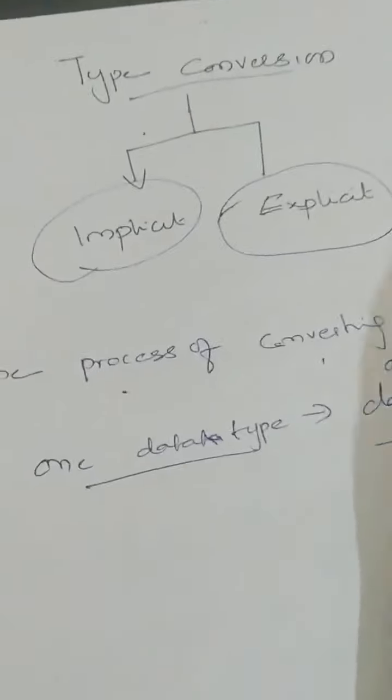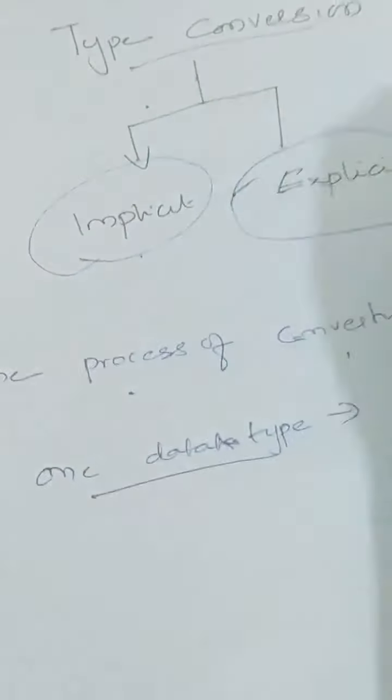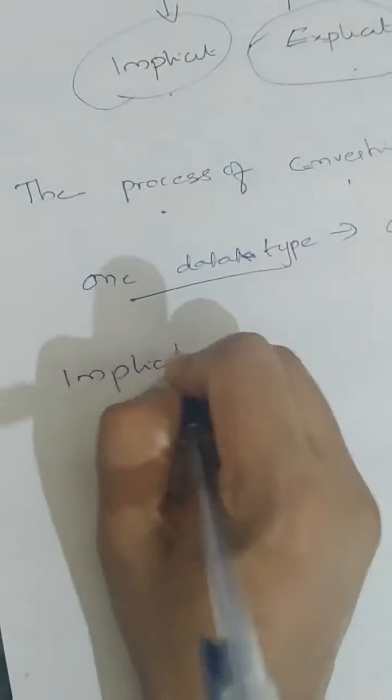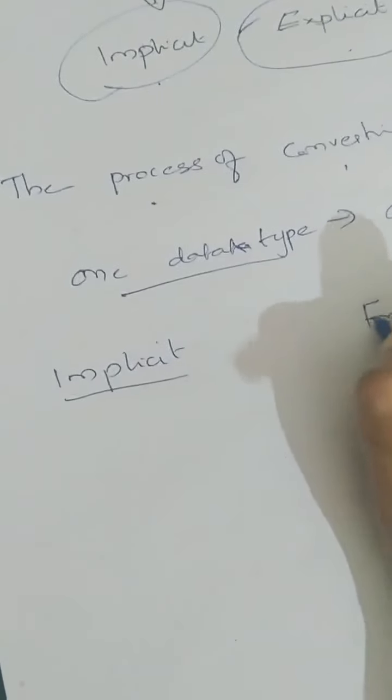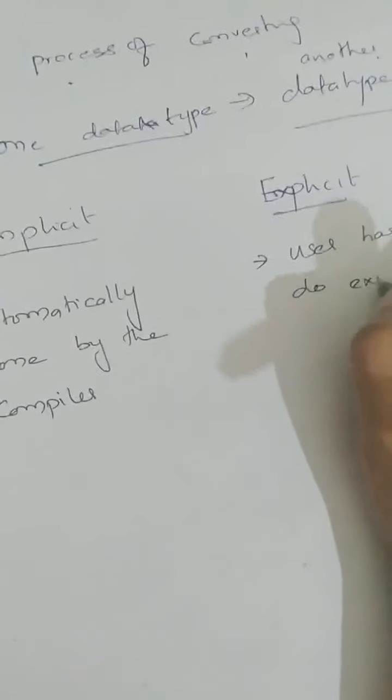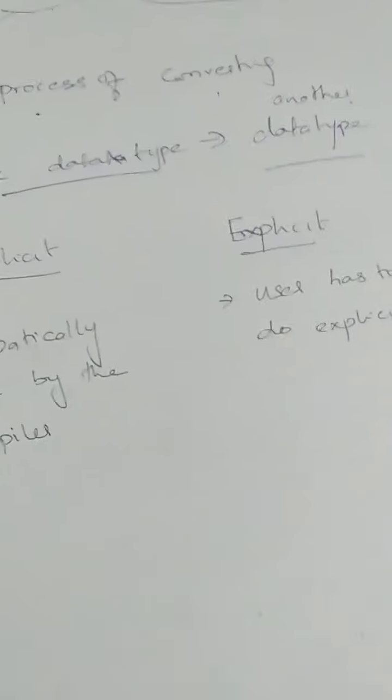Implicit means automatically done by the compiler. Explicit means the user has to do the conversion. The difference between implicit conversion and explicit conversion will surely be asked. Implicit means it is automatically done by the compiler; explicit means the user has to do the conversion explicitly.